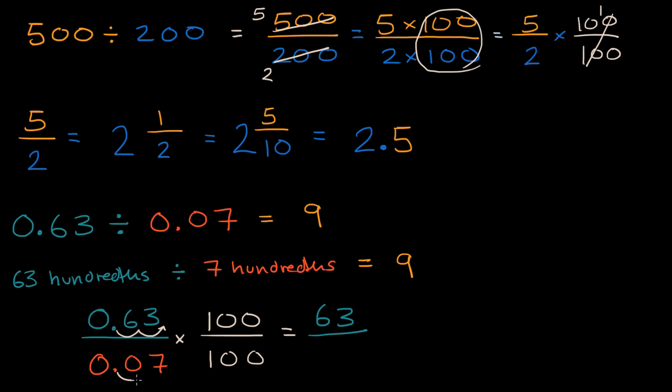Once again, we move the decimal two to the right. This is going to be seven. So 63 divided by seven, once again, that is going to be equal to, that is going to be equal to nine.